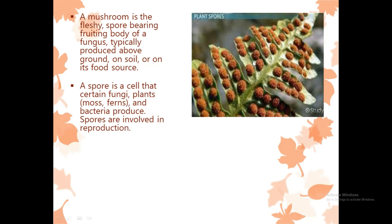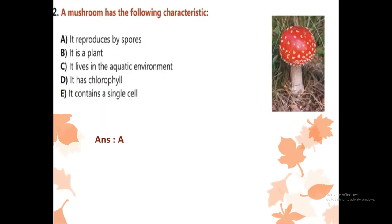It means a fungus can be reproduced by spores. Now go back to the question. A mushroom reproduces by spores — obviously correct. Is it a plant? No. Does it live in an aquatic environment? It may, but that's not fully correct. Does it have chlorophyll? No — it's not a plant, so it doesn't have chlorophyll. Does it contain a single cell? No — there are different types of organisms. Some are unicellular, others are multicellular with more than one cell. So that option is incorrect.